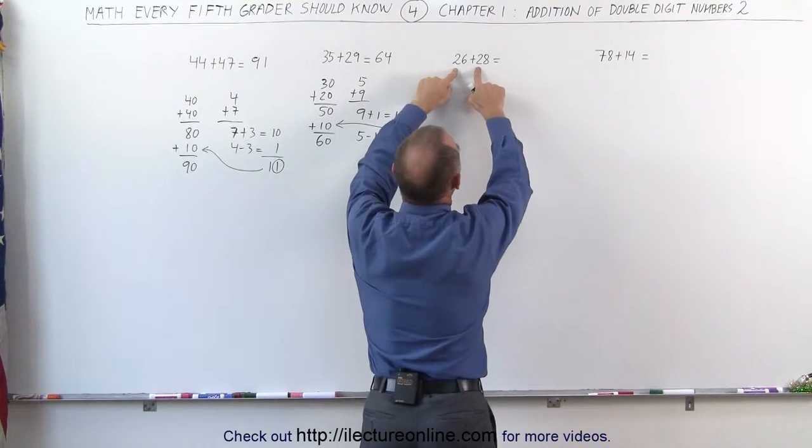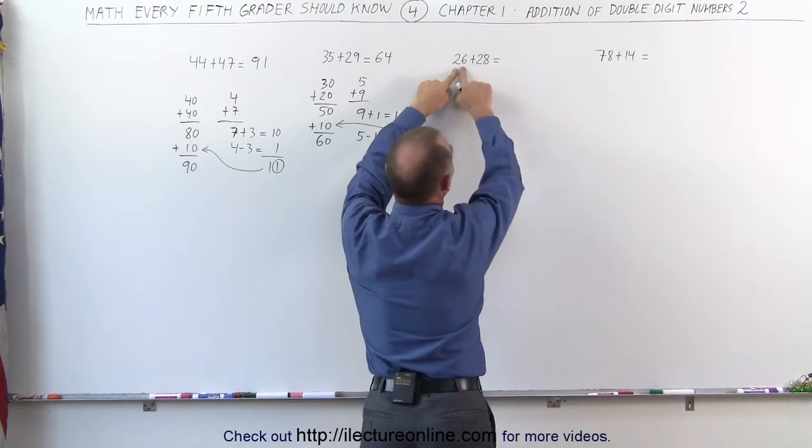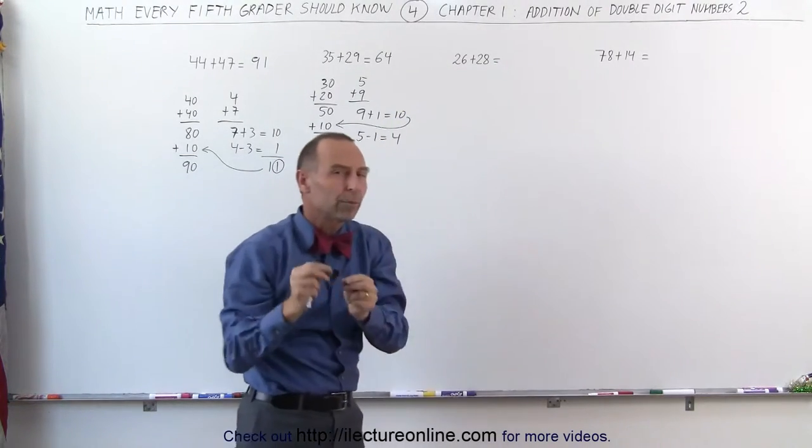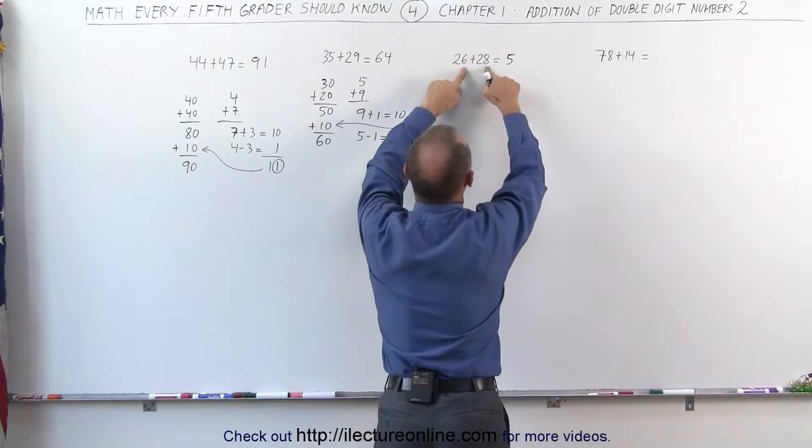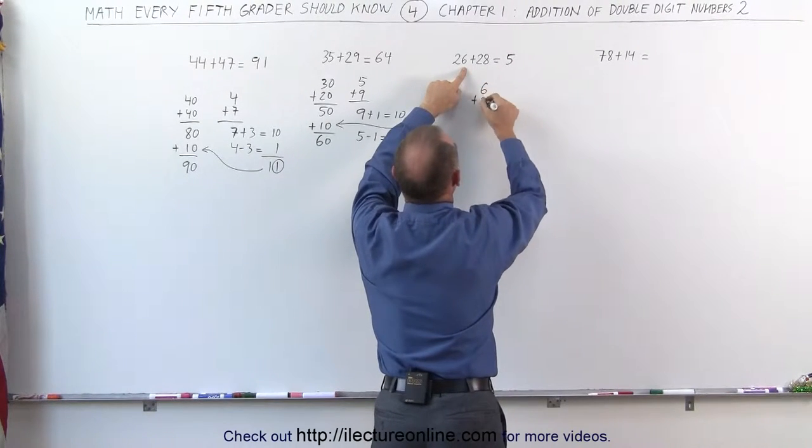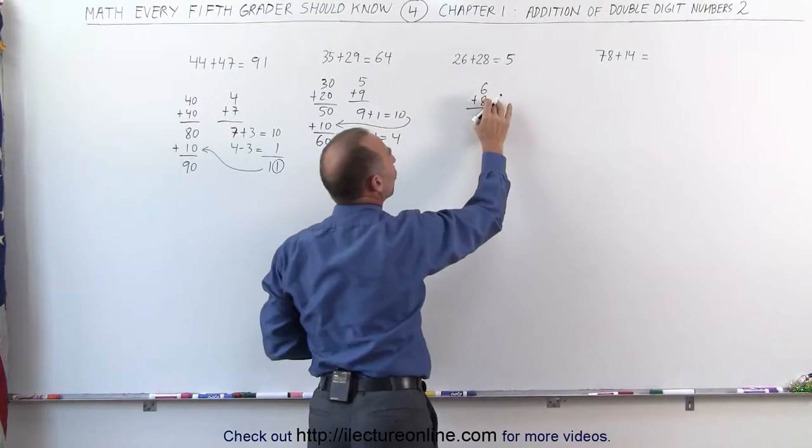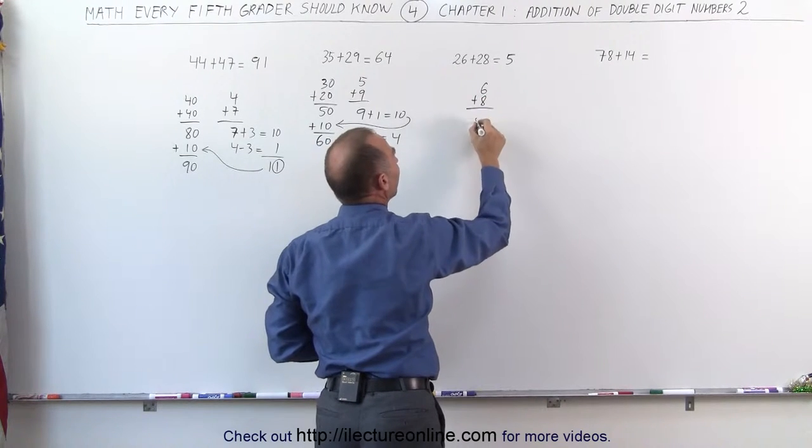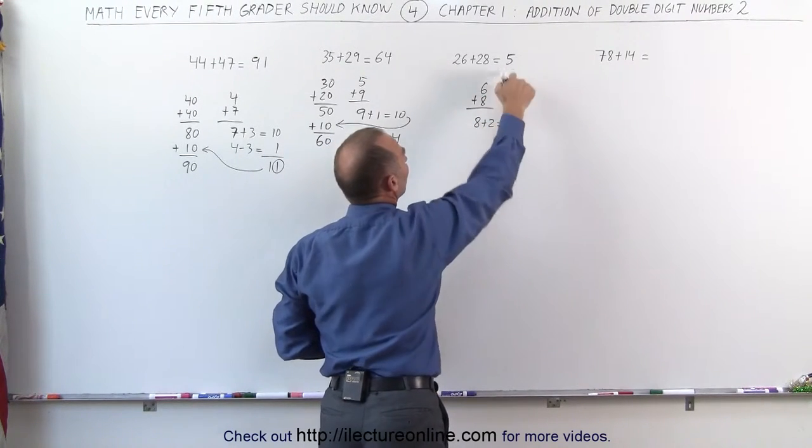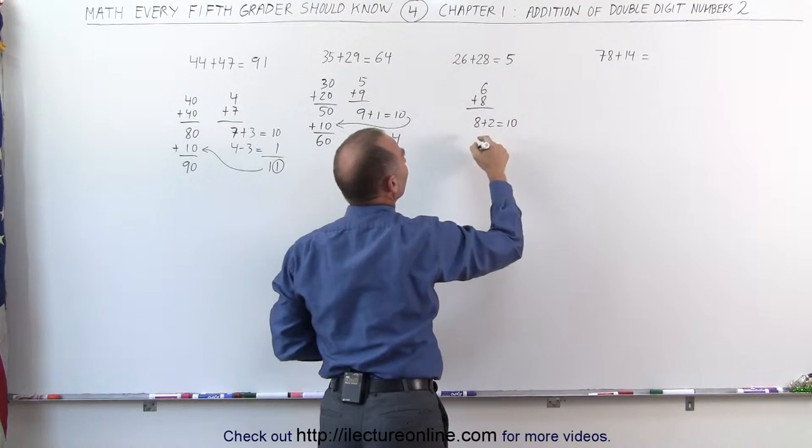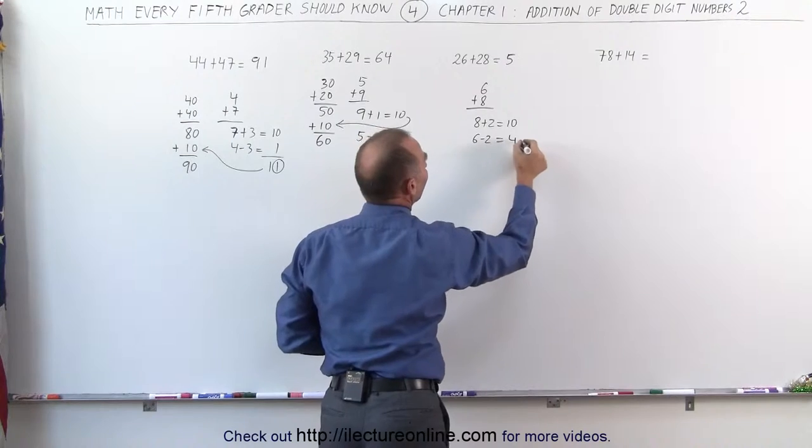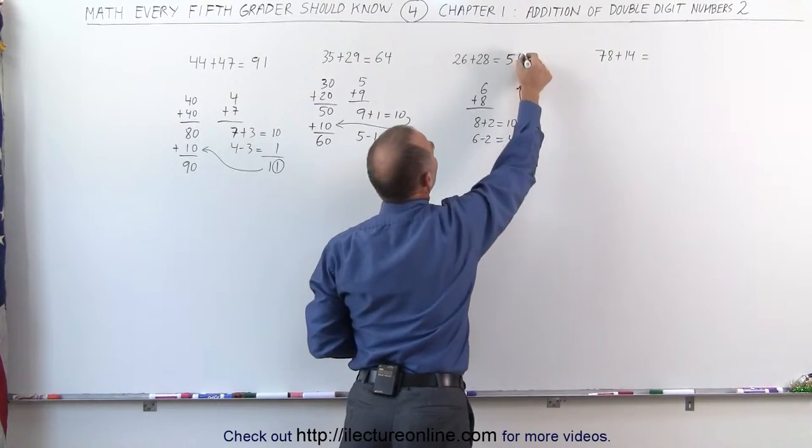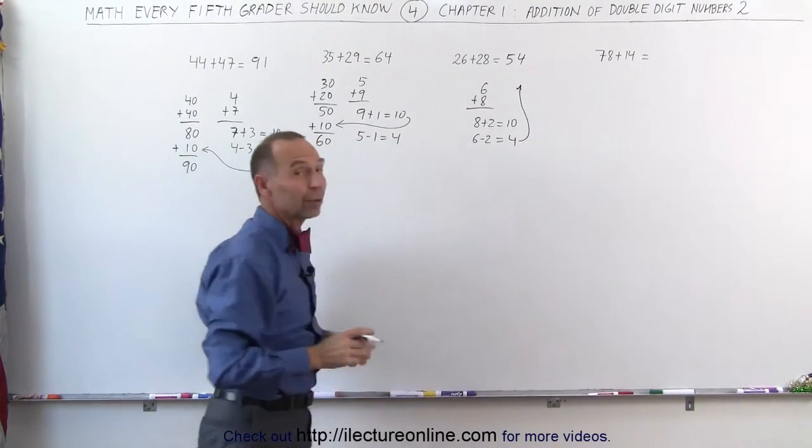20 plus 20, 2 plus 2 is 4, that gives me 40. But however, 6 plus 8 is more than 10, so 40 plus 10 gives me 50. I put down the 5. 6 plus 8, I needed 2 more to the 8 to give me a 10. 8 plus 2 is equal to 10, that made a 4 into a 5 here. And now I take the 2 away from 6, that gives me a 4, and I add the 4 over here to make that a 54. Again, quickly,